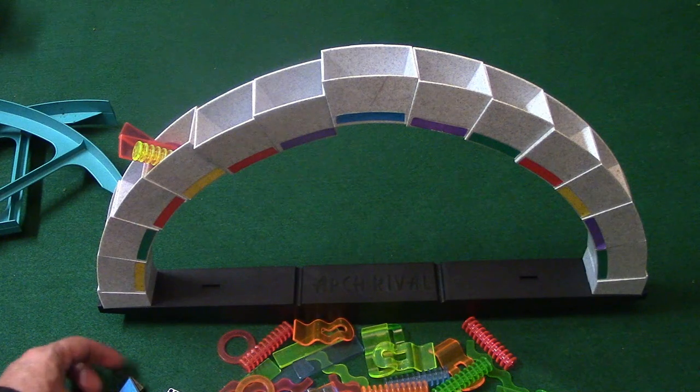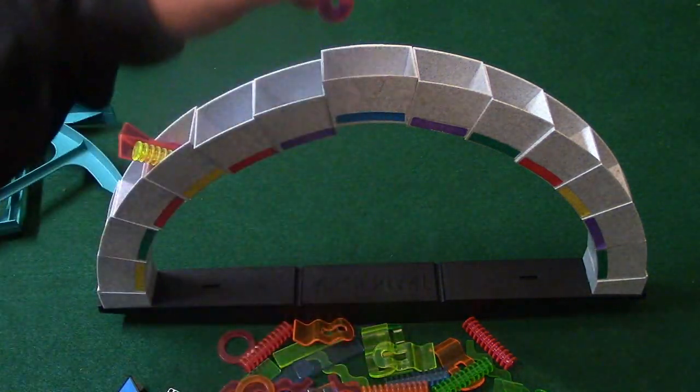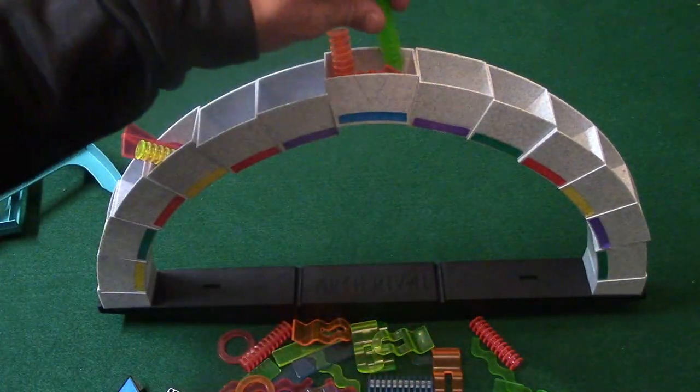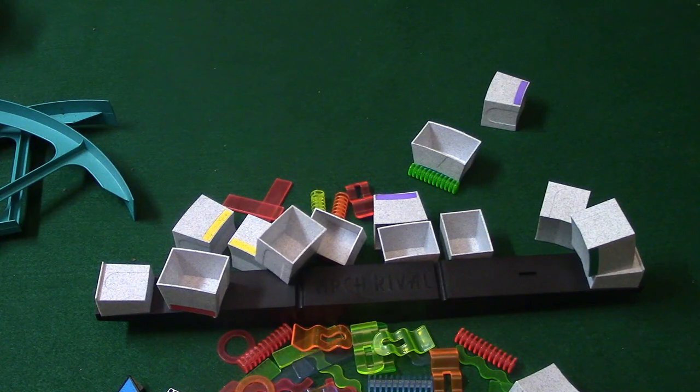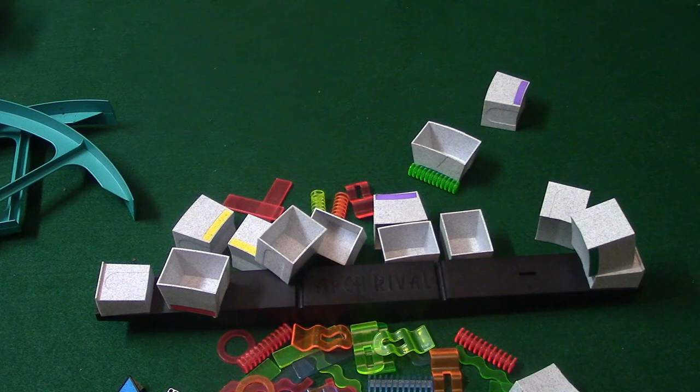So the next player rolls. He has a six blue, and the blue is going to be the middle piece over here, which is the keystone. So he'll go ahead and put in six pieces here. One, two, three, and it went ahead and toppled. So player two just lost the game and everybody else won the game.